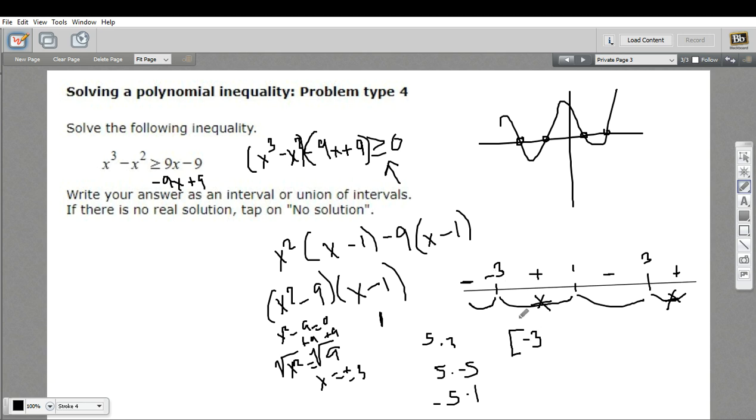That's where it is actually 0. And this is going to go up to and include 1 because it's also 0 at 1. And then we're also going to have this region here from 3, including the 3, because again, it's 0 there. And then all the way up to infinity. So that is how to solve a polynomial inequality with a little bit of factoring first.